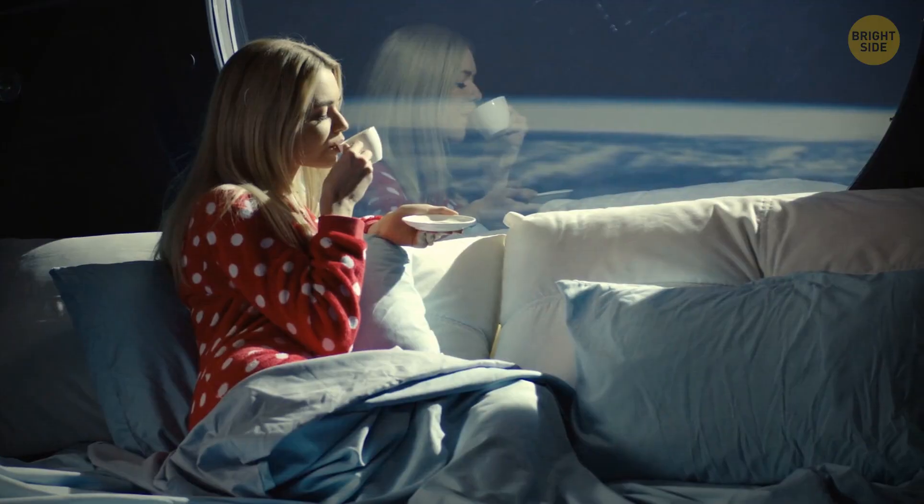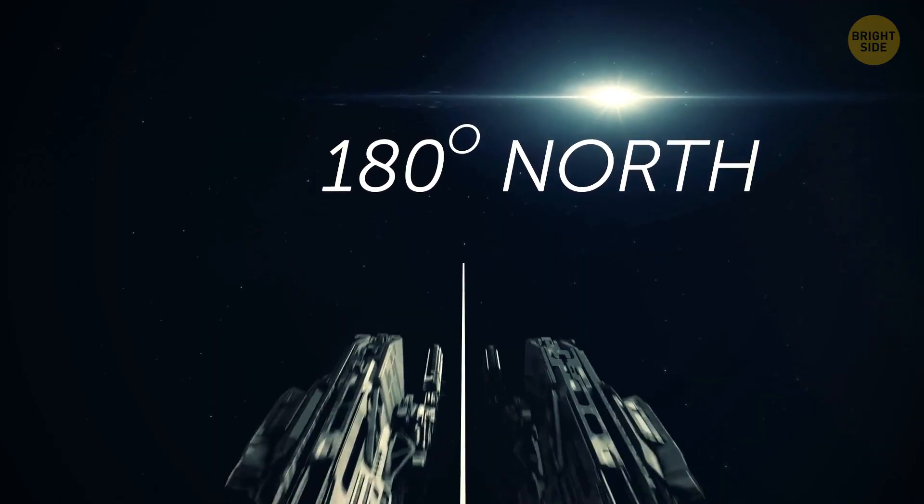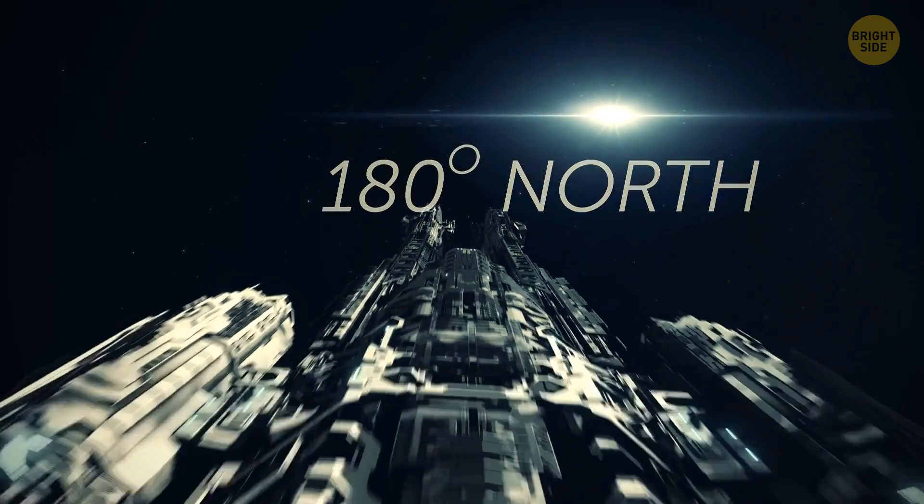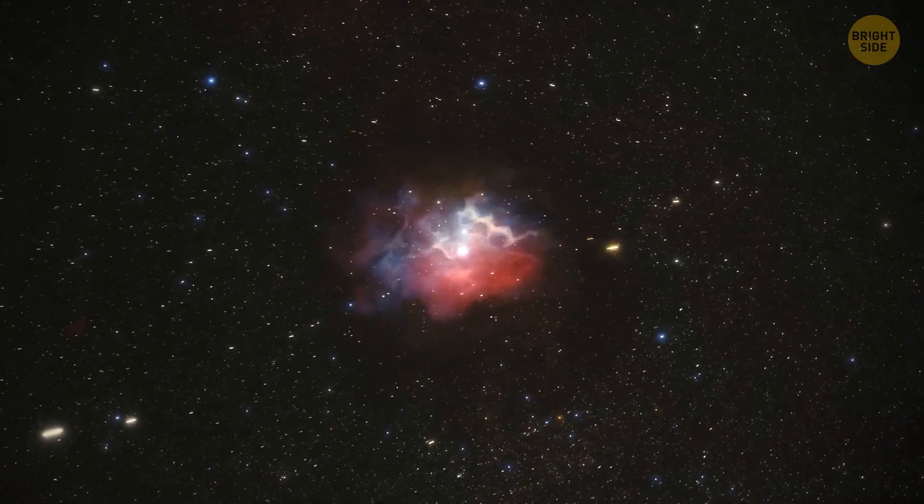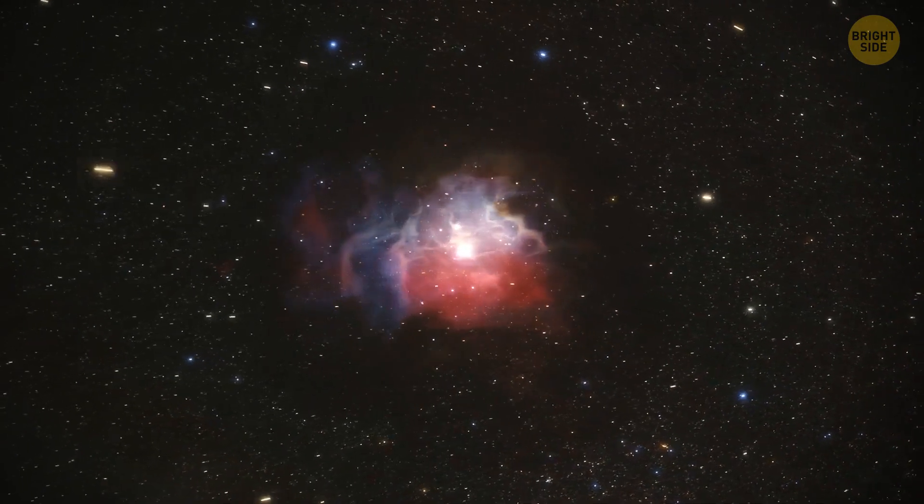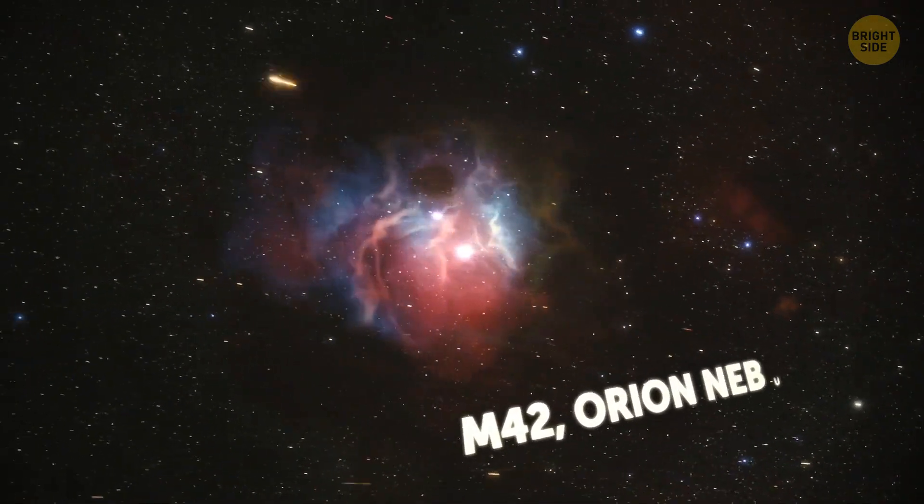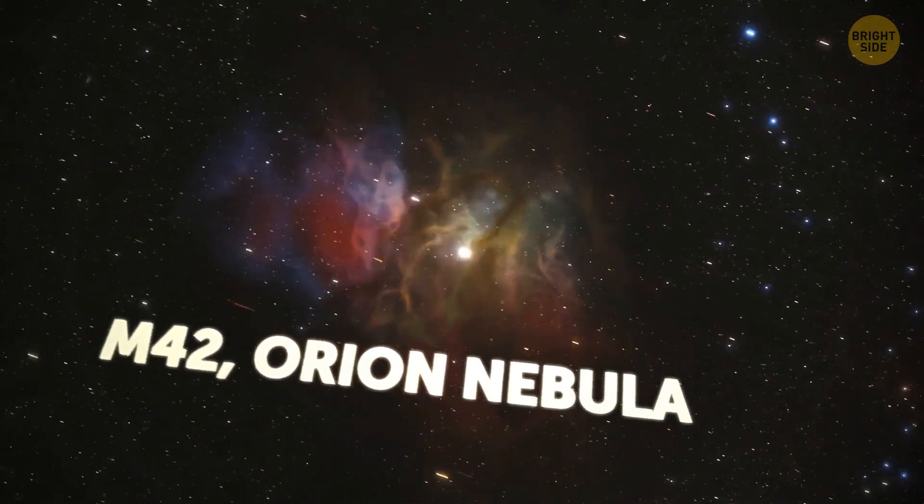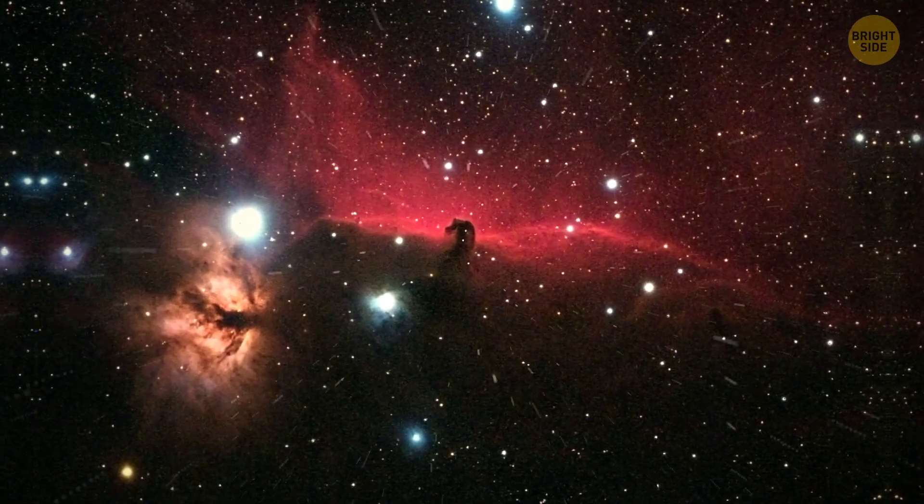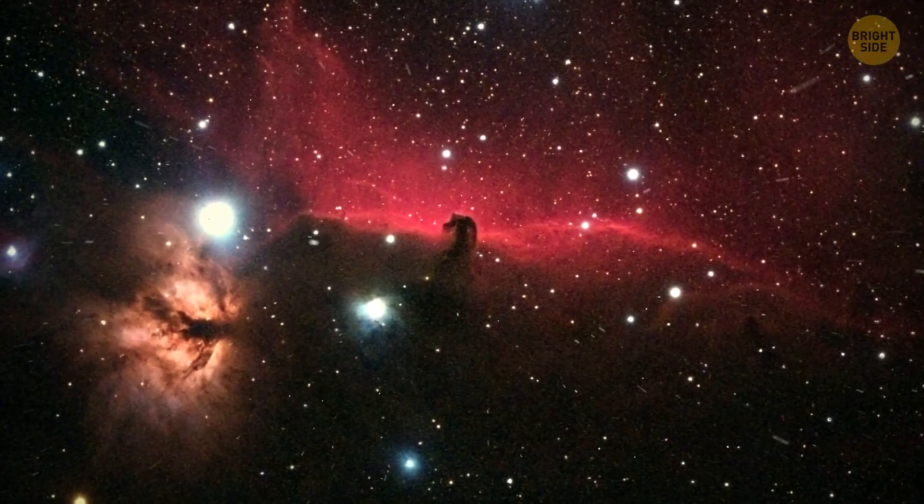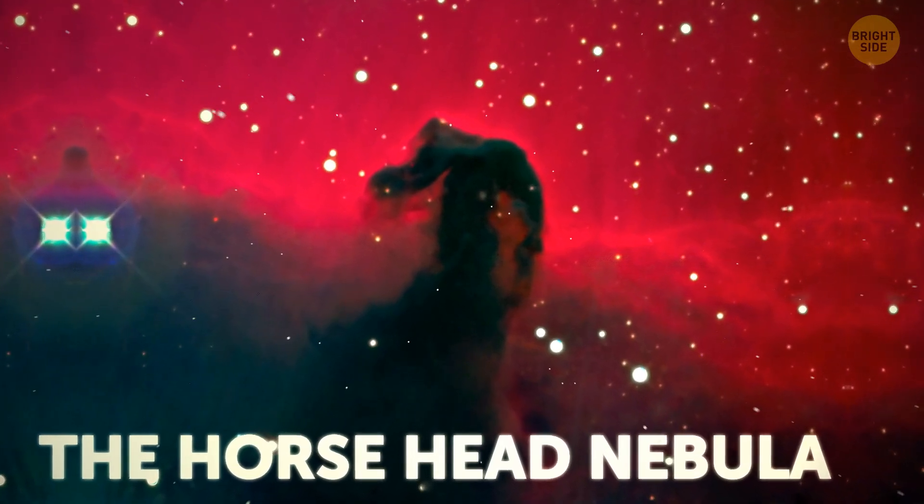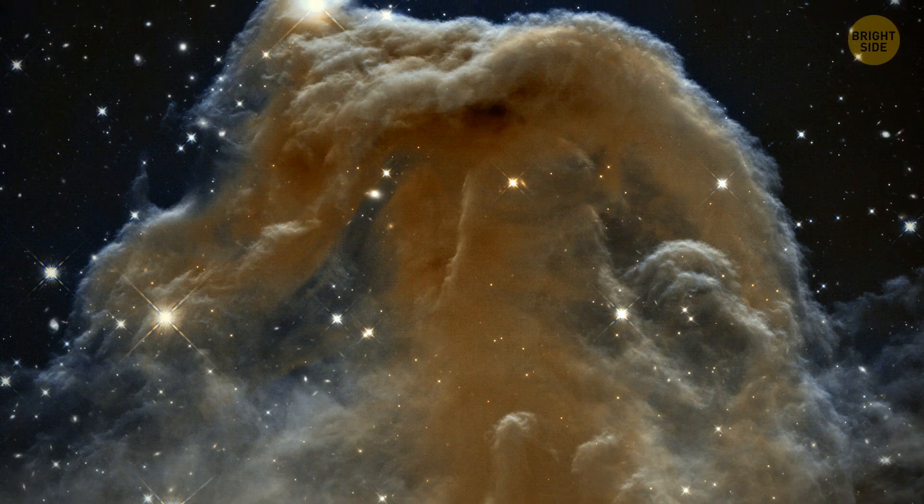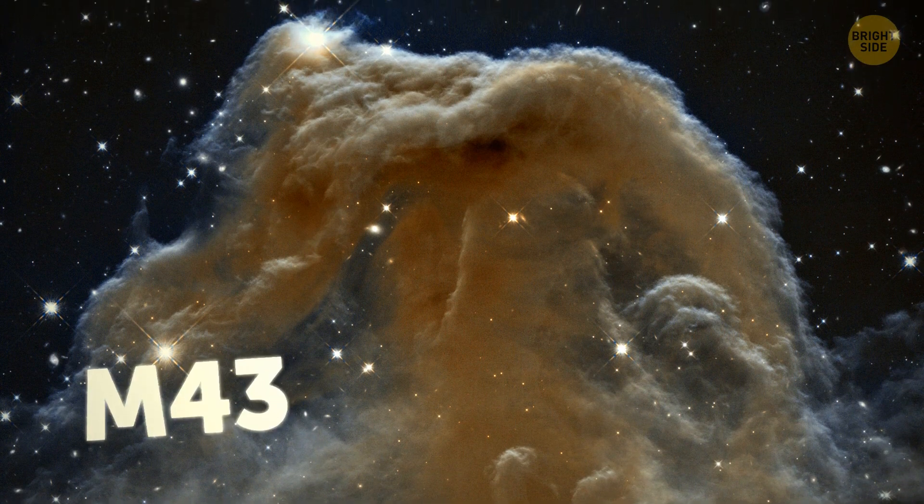Now passengers, as we head toward galactic latitude 180 degrees north, as Terrans are accustomed to calling it, our first main item of interest will be an intense star-forming region known as M42, the Orion Nebula. But first, a special treat by the captain that's not on the advertised itinerary. The Horsehead Nebula. It's off to the port side. That's left for you Aggies. Its designation is M43.